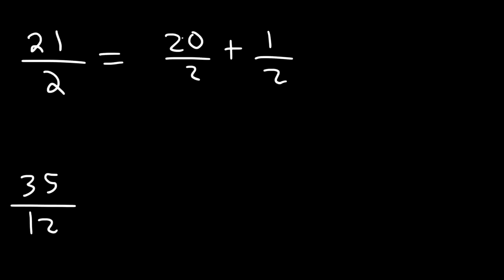Now let's try our last two examples: 21 over 2 and 35 over 12. So 21, I can break that into 20 and 1. You want to choose the highest multiple of 2 that is just under 21. Now 20 divided by 2 is 10. So I get 10 plus 1 half, which is 10 and 1 half.